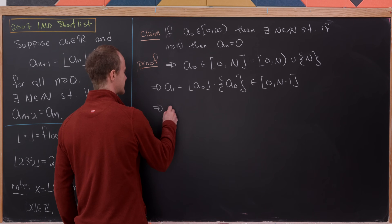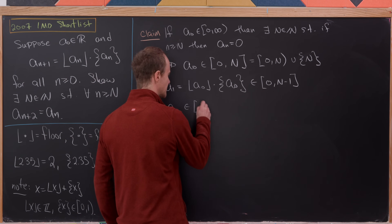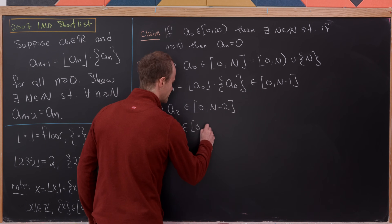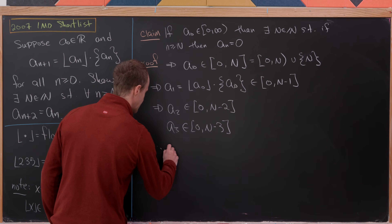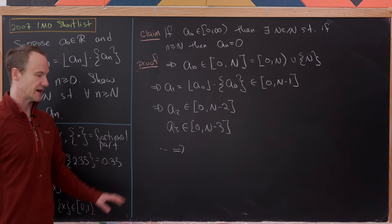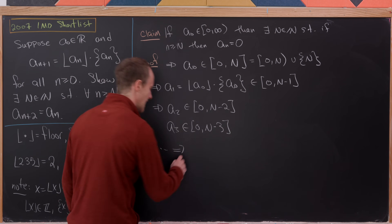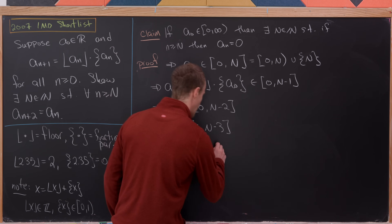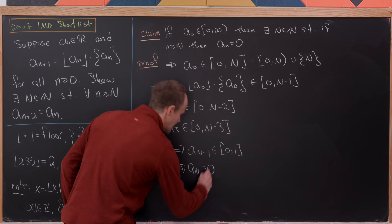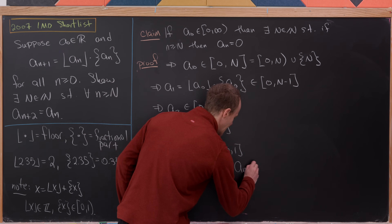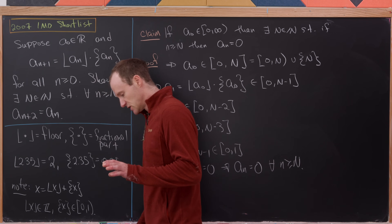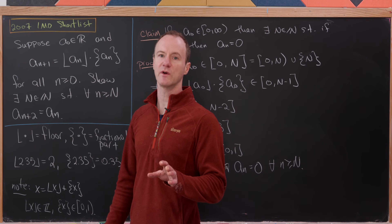Continuing: a₂ ∈ [0, N−2), a₃ ∈ [0, N−3), and so on. After N−1 steps, a_{N−1} ∈ [0, 1), which means a_N = 0. From there, aₙ = 0 for all n ≥ N. So the statement holds for all non-negative starting values. Now we move on to the case where we start with a negative real number.